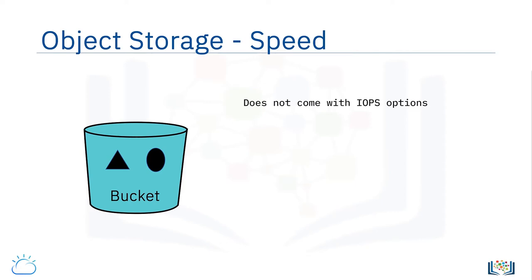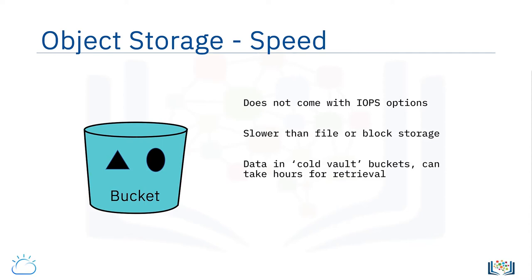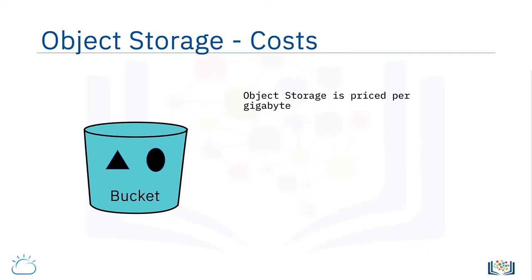Object storage tends to be very slow in comparison with file or block storage, where downloads typically take seconds if not longer to complete. Where providers offer cold vault buckets, data retrieval from these tiers can sometimes even take hours because the storage is kept offline. If your application needs fast access to files, then object storage may not be a good option.